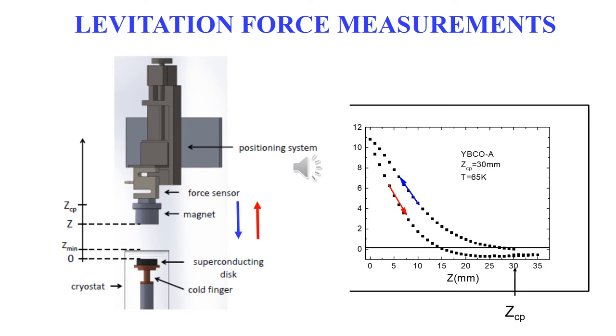Finally, the magnet superconductor distance increases up to zcp or above. The levitation force is recorded at each step of the measurements.